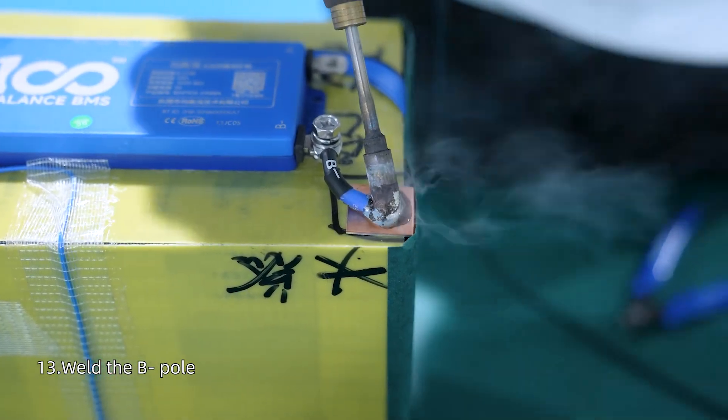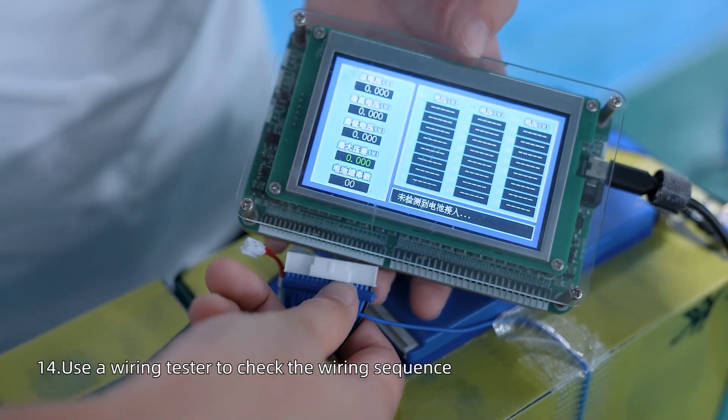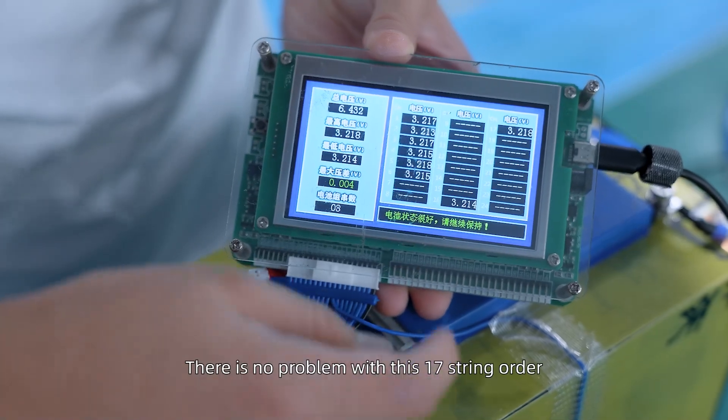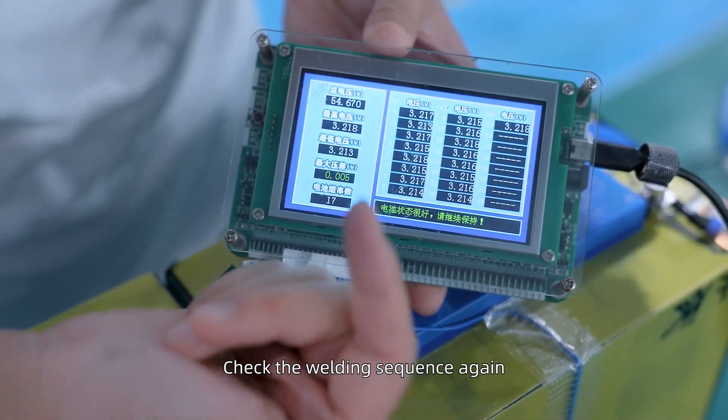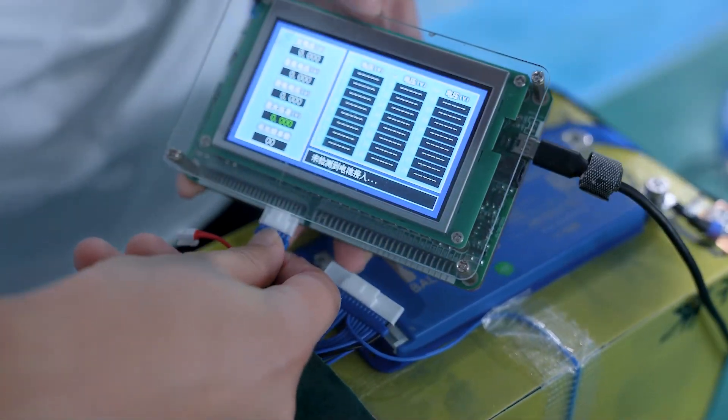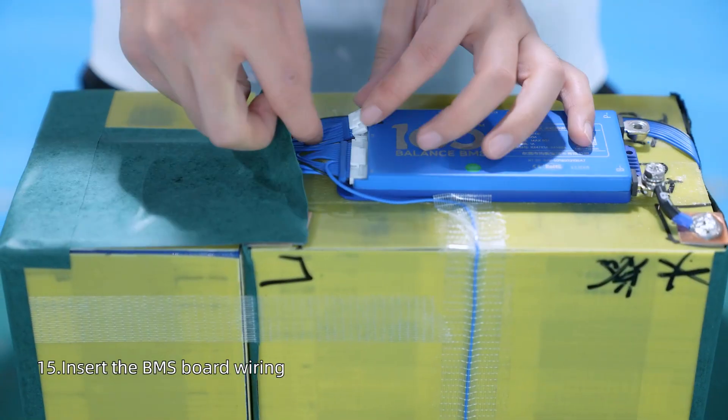While the B port, use the wiring test to check the wiring sequence. There is no problem with this 17 string order, and check the wiring sequence again. The welding sequence is completely correct, insert the BMS port wiring.